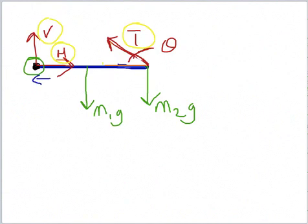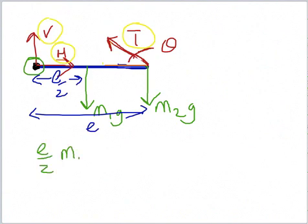Well, that distance is L over 2. This distance is L. So the torque clockwise is L over 2 M1 G plus L M2 G. How about the torque the other way, anticlockwise, that comes from this tension?